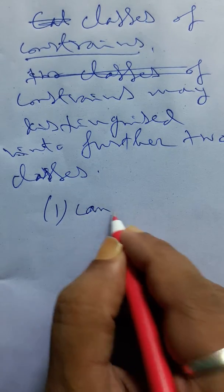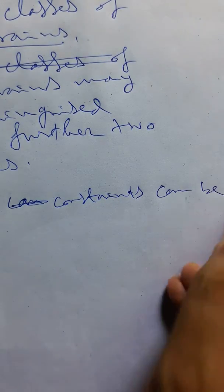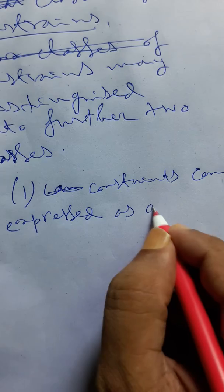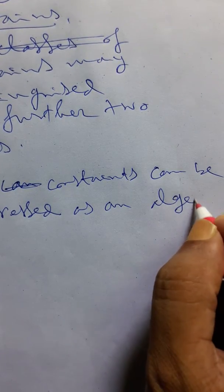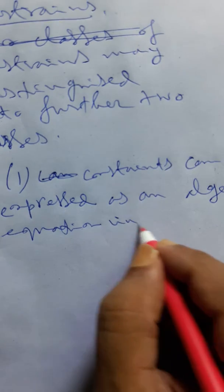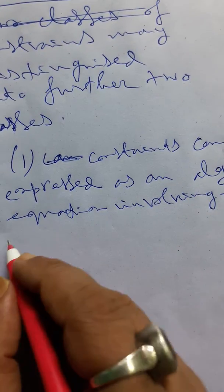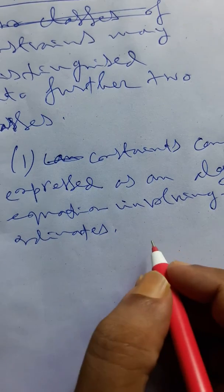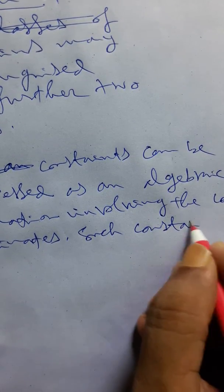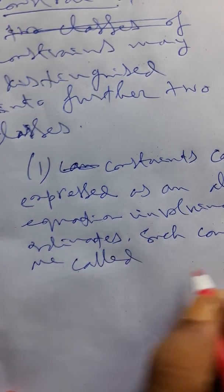This constraint can be expressed as an algebraic equation involving in coordinates, simply involving the coordinate. Such constant is called holonomic constants.